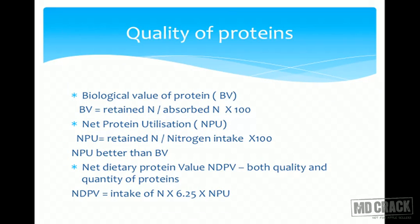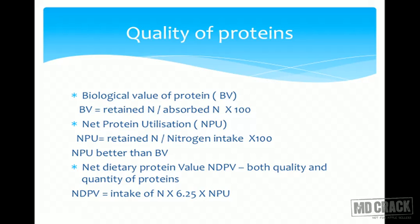Different indices are used to assess protein quality. Biological value of protein equals retained nitrogen divided by absorbed nitrogen, multiplied by 100. Net protein utilization (NPU) equals retained nitrogen divided by nitrogen intake, multiplied by 100. NPU is considered better than biological value because it accounts for digestion — it tells how much protein is actually being utilized rather than just absorbed. Net dietary protein value (NDPV) looks at both quality and quantity: NDPV equals nitrogen intake multiplied by 6.25, multiplied by NPU.